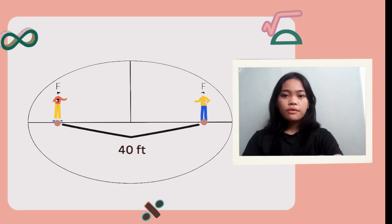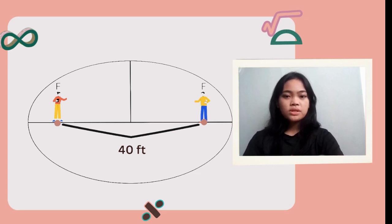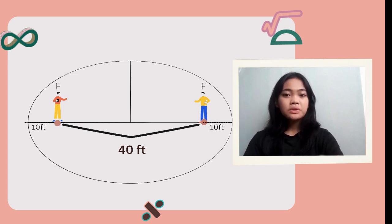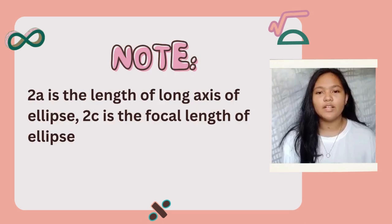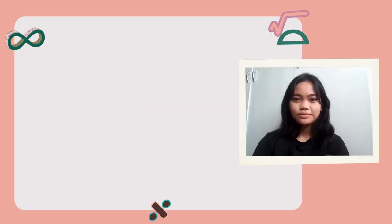From the question, we know that the distance from the focus to its nearest left or right endpoint is 10 feet, which means A minus C equals 10. Note that 2A is the length of the long axis of the ellipse, and 2C is the focal length of the ellipse.